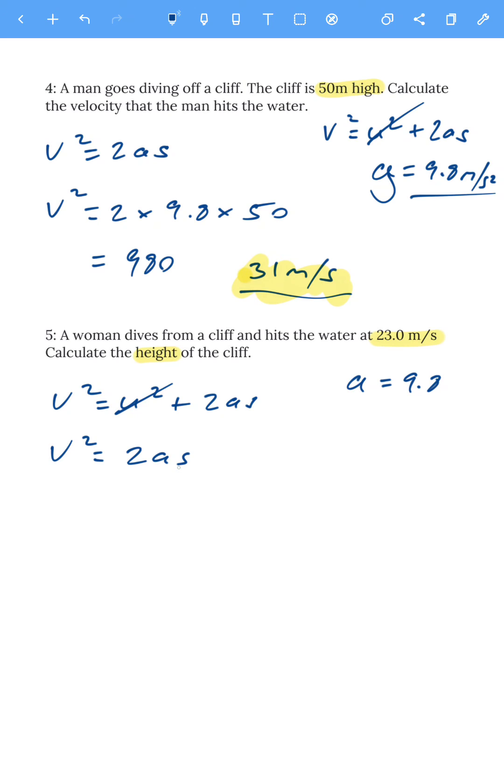So v squared, so we need to do 23 squared divided by 2 times 9.8. If you put it on your calculator it will give you the height which would be to two significant figures 27 meters. So she's obviously got more sense and has jumped from a lower cliff. Personally I still think that's too high.